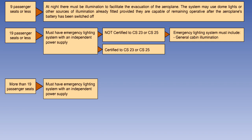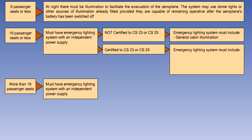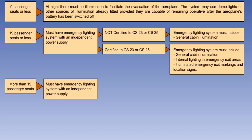For aeroplanes with an approved passenger configuration of 19 seats or less but more than 9, which are certified to EASA CS23 or CS25, the independent emergency lighting system must include general cabin illumination, internal lighting in emergency exit areas, and illuminated emergency exit markings and location signs.